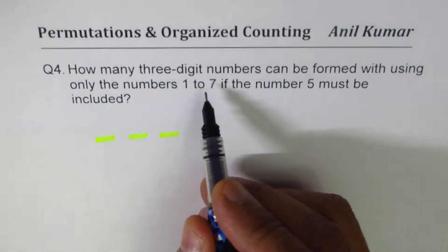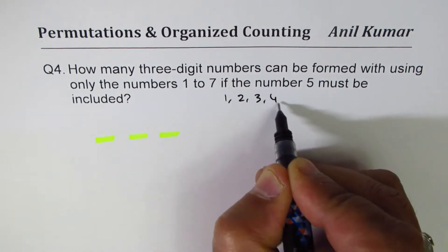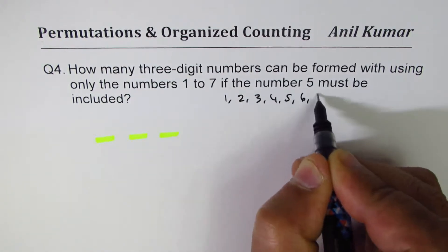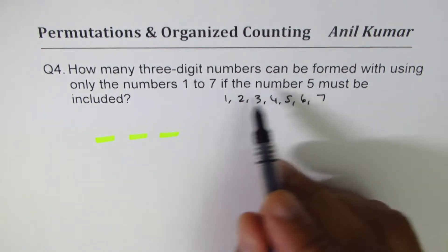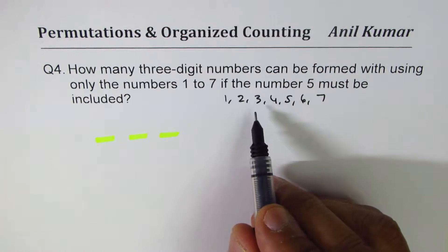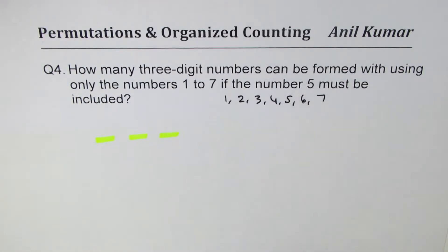The numbers being used are 1 to 7, so we select from 1, 2, 3, 4, 5, 6, and 7. There are seven numbers with us. With these seven numbers, we have to form three-digit numbers which must include 5. I hope the question is clear. You can pause the video, answer the question, and then look into my suggestions.